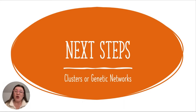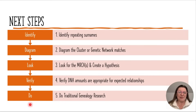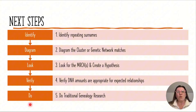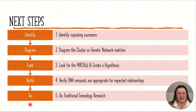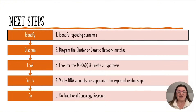Now I want to focus on next steps. Once you've created the LEADS method clusters — also called genetic networks — these are my five steps: identify repeating surnames in the cluster, diagram the cluster or genetic network matches, look for the most recent common ancestors and create a hypothesis, verify that the amounts of DNA are appropriate for the expected relationships, and finish up with traditional genealogy research.